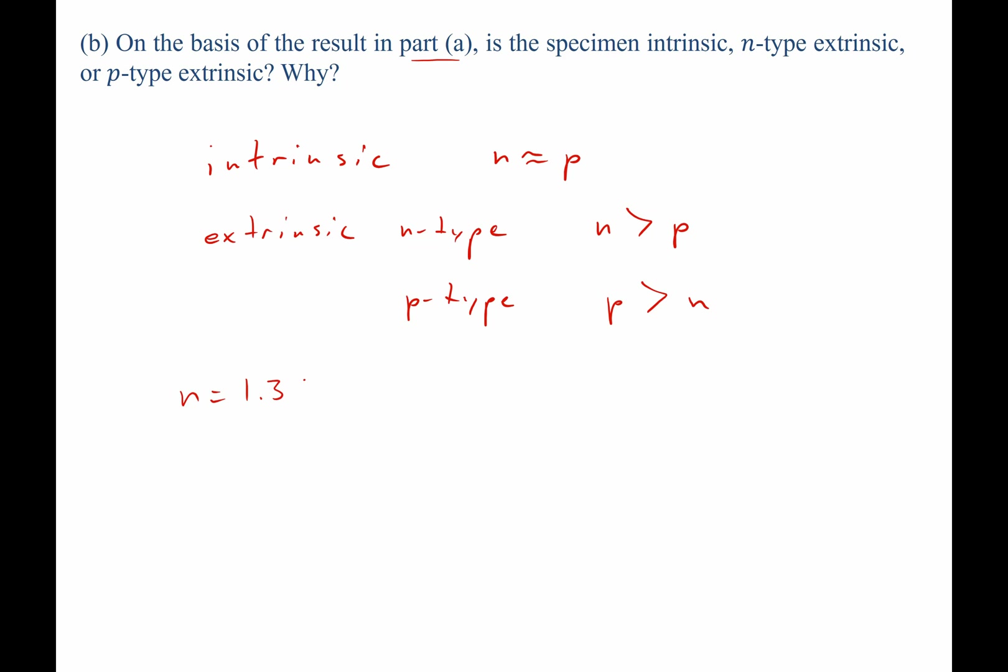In this case, n equals 1.36 × 10^16 per meter cubed, whereas p equals 7 × 10^17 per meter cubed.